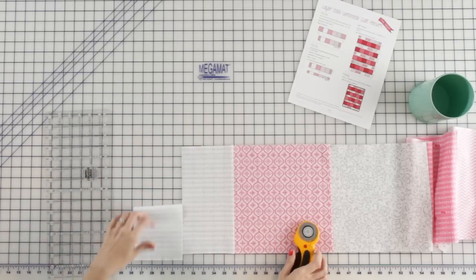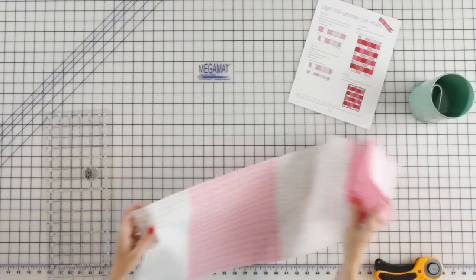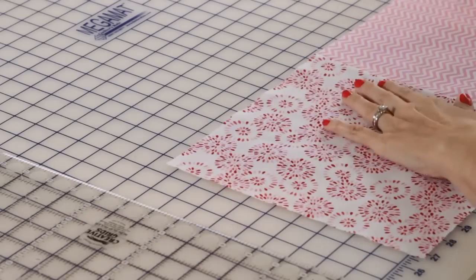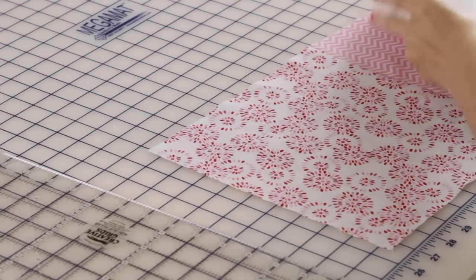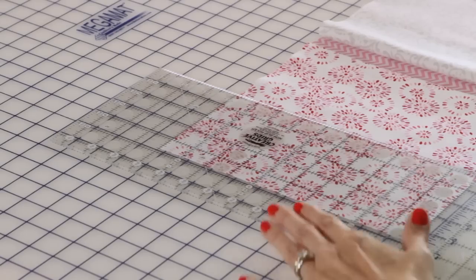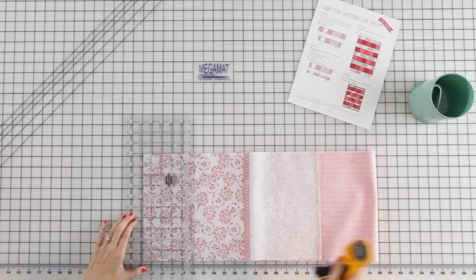And then I keep a scrap bin on my table and I'm just going to throw it in there and save my fabric for another project. I'm going to flip my row around and we're going to do the same thing. We're going to line up at four and three quarter and at the bottom and cut.